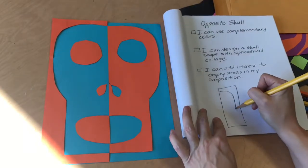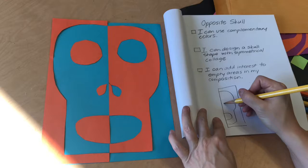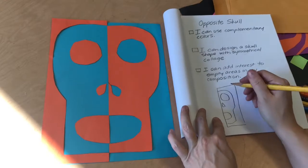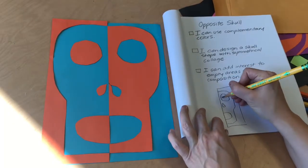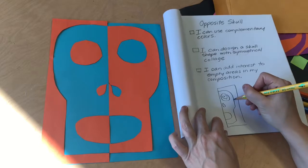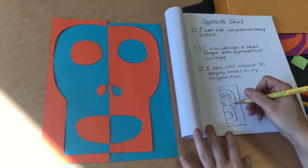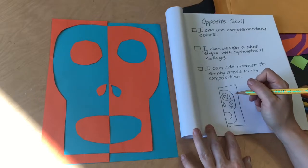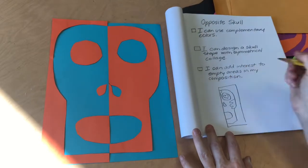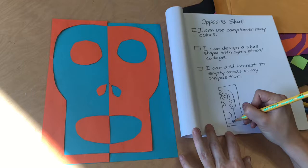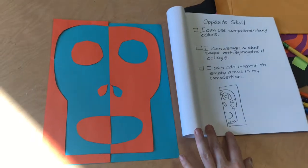So before you dive in and start adding any more detail, you should play in your sketchbook a little bit with things that you might want to go in the eye socket, things you might want to go on the cheekbone, or designs that might interest you for the forehead or chin. Wherever you have an empty spot you'll be adding interest.